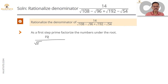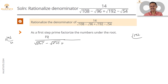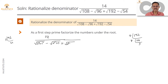So 108 is 3 cubed into 2 squared. Minus root 96 — I will quickly prime factorize it here. I know 96 is divisible by 3, so this is going to be 32 into 3, and 32 is 2 to the power 5. So 96 is 2 to the power 5 into 3. Plus 192 — I know it is divisible by 8, so 192 divided by 8 is 24, and 24 divided by 8 is 3. So it is 3 into 8 into 8, each 8 is 2 cubed, giving us 2 to the power 6 into 3. Minus 54, which is 27 into 2 — 27 is 3 cubed — so 54 is 3 cubed into 2.